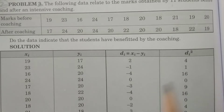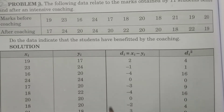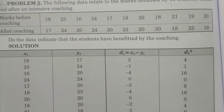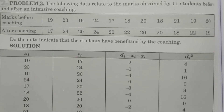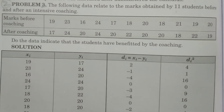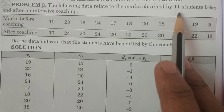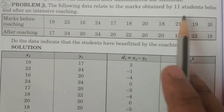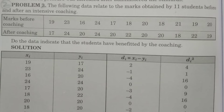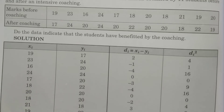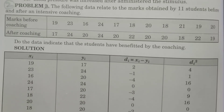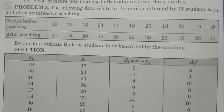That is the testing procedure to be conducted here. The data of 11 students is given, so n = 11, and n₁ = n₂ = n = 11. For this, you have to calculate all values as explained previously in problem number one.